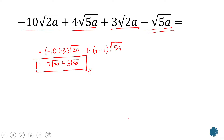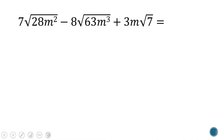Let's go to the third example. Here, all of the radicands are different, but these radicals are not in simplified form. So the first thing we consider is: can we simplify the radicals? If we can simplify them, let's simplify them first, and then from there we can see if we can combine the radicals or not.